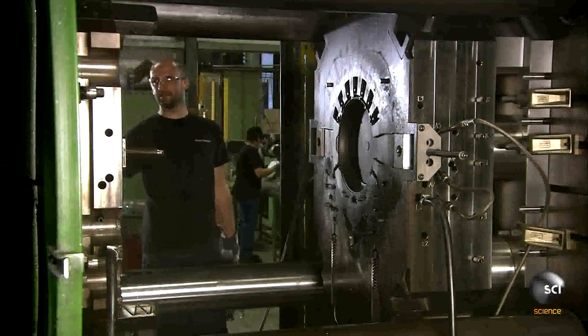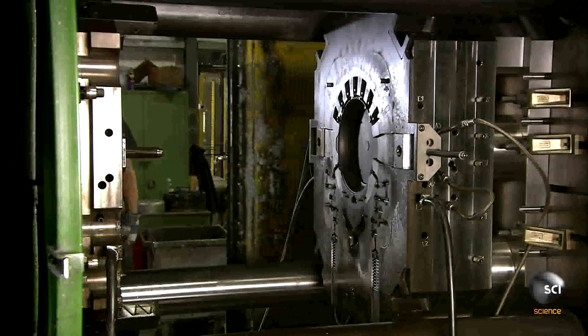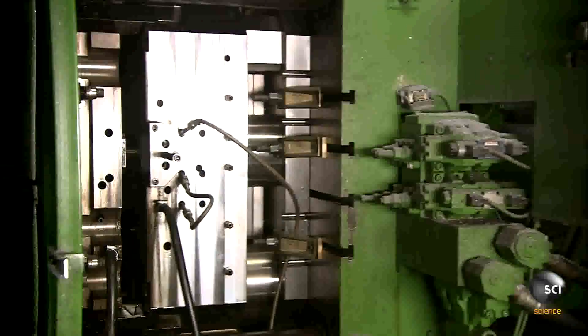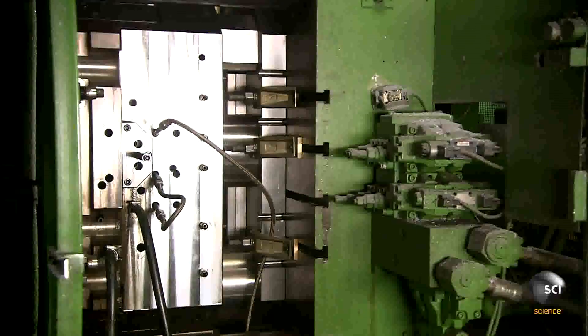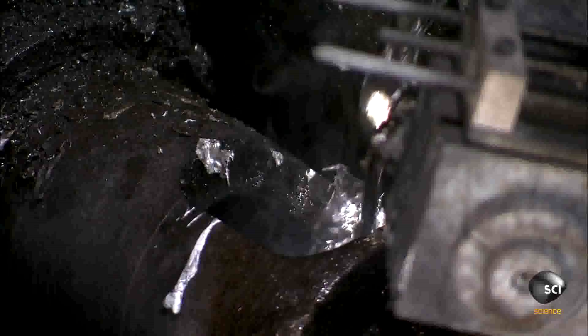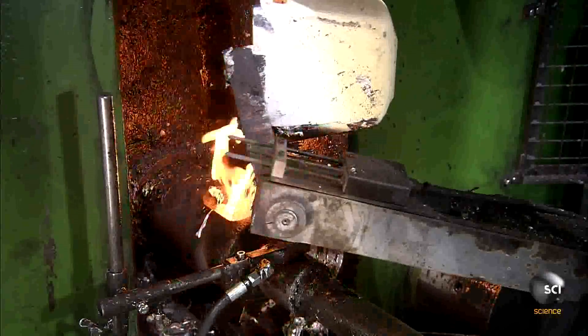They use this two-part die to transform liquid aluminum into a frying pan. The robotic ladle pours the aluminum into the die through a cylindrical port.